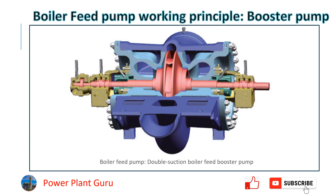The booster pump takes suction from the deaerator and discharges high pressure water to the boiler feed pump suction. This is a double suction type booster pump where water comes in from two sides, passes through the impellers, and high pressure water comes out from the discharge casing. There may be single suction types as well depending on the requirement. This pump's discharge pressure feeds into the boiler feed pump suction.